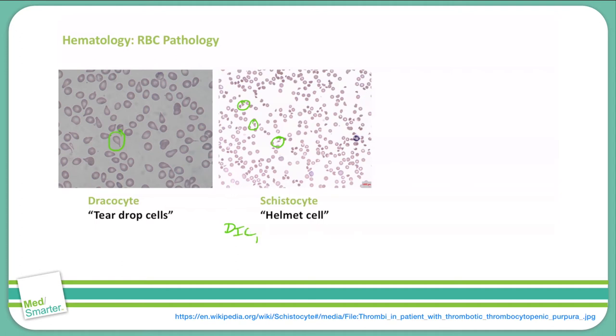We also see this in TTP, which is thrombotic thrombocytopenic purpura, as well as in hemolytic uremic syndrome, HUS, and then we also find it in HELP syndrome. HELP is an acronym for hemolysis, elevated liver enzymes, and low platelets. Typically we see that in preeclampsia and eclampsia.